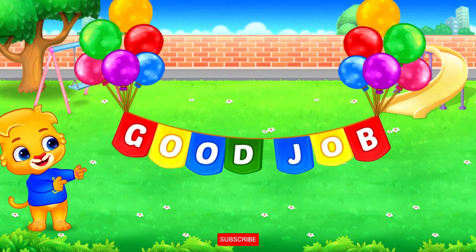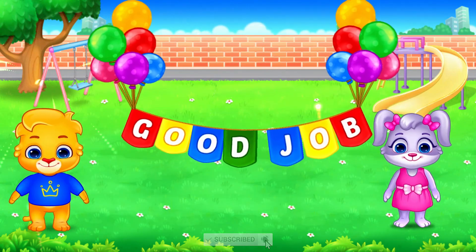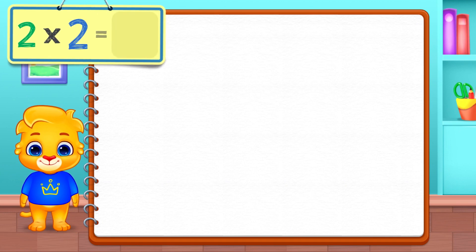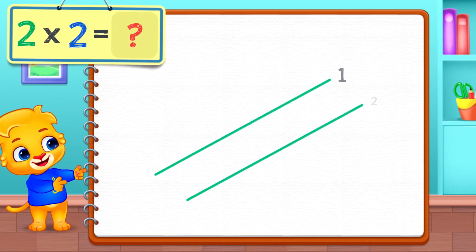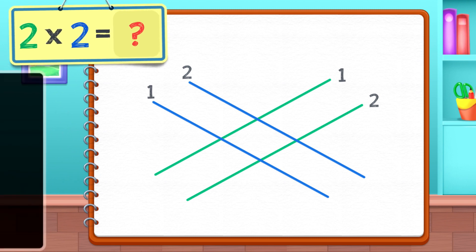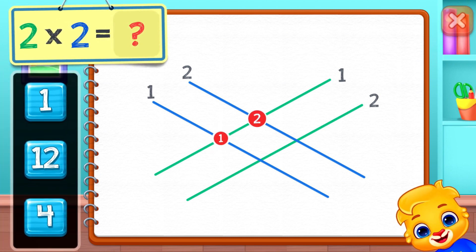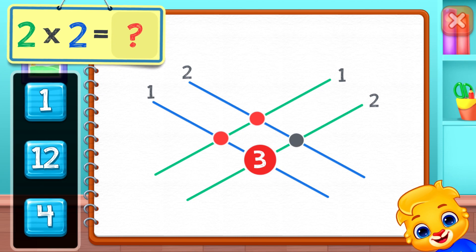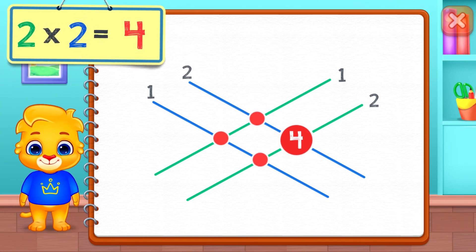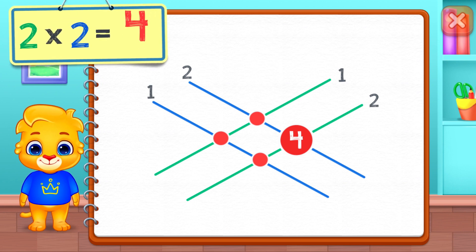Good job! Two times two equals — one, two, three, four. Two times two equals four.